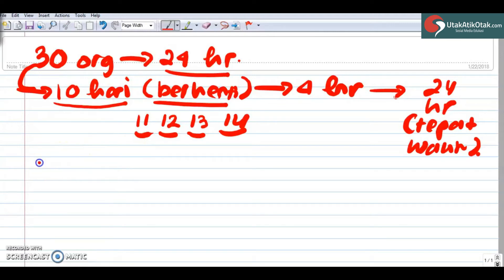Coba kita pahami dulu, ya kalau 30, 30 kali 24 adalah berapa ini? 24 kali 3 adalah, 12, 6, 7, berarti kalau 30 berarti 720.